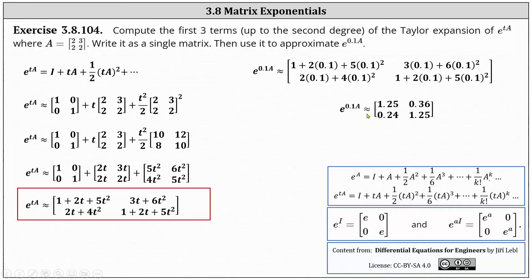e to the power of 0.1A is approximately equal to the two by two matrix, where the entries in row one are 1.25 and 0.36, and the entries in row two are 0.24 and 1.25.